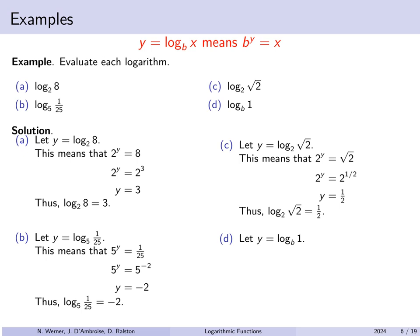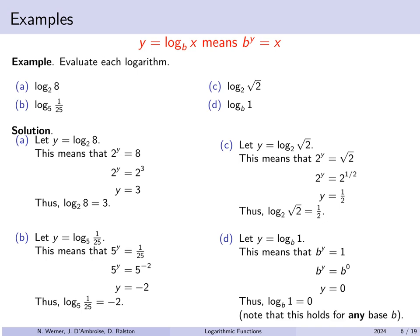Finally, let y equal log base b of 1, so b to the y must equal 1. We can write 1 as b to the 0, and since b is a positive number, that exponent must be 0. So log base b of 1 equals 0 regardless of b, as long as b is positive and not equal to 1 — those were the conditions for the exponential function to be one-to-one and have an inverse. This holds for any valid base.